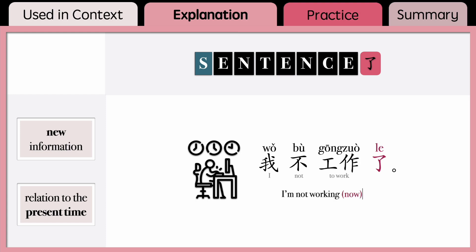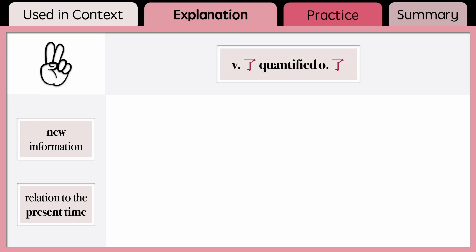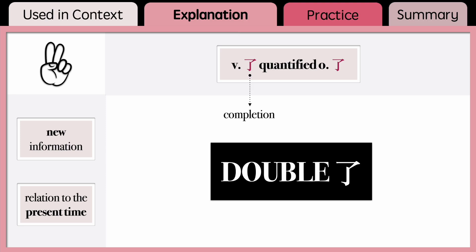In the sentence 我不工作了, the speaker prompts new information that I'm not working. But not only that — by adding 了 at the end, it also expresses that the action of 我不工作 is in relation to the present time. It expresses that I used to work in the past, but I'm not working now. In a similar manner, 了 ending the sentence also indicates relation to the present time when it comes after two types of completed actions: one is when you mention the duration of completed actions, and the second is when the completed action has quantified objects. It's usually called the double 了 structure, because 了 not only comes after an action verb as a completion marker, but also appears again at the end of the sentence to indicate relation to the present time.